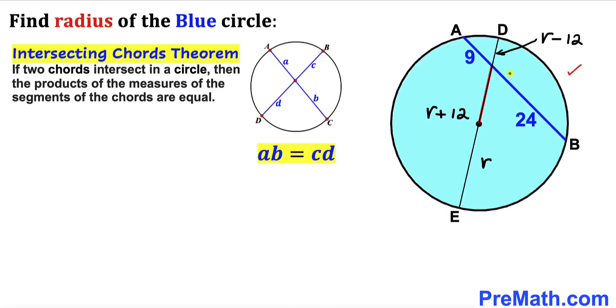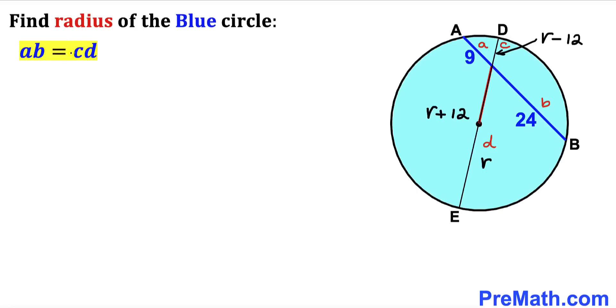Now let's focus on our problem. We have these two chords AB and DE and they are intersecting. I'm going to call this line segment A, this line segment B, this line segment C, and this line segment D. Let's fill in the blanks in this formula. A in our case is 9 times B is 24, equal to line segment C is r minus 12 times D is r plus 12.